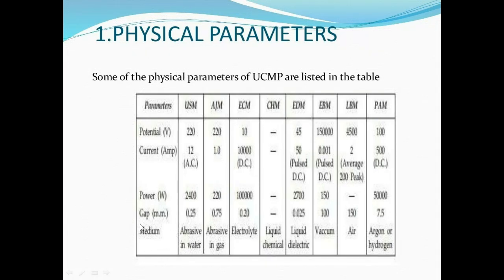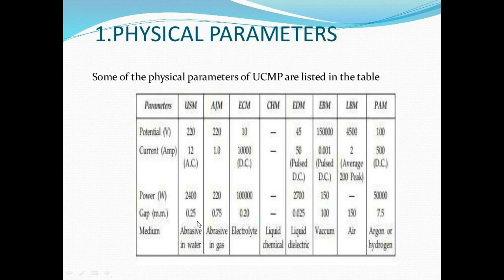For the medium — what type of material is used for removing metal: abrasive in water, abrasive in gas, electrolyte (water plus salt for electrochemical machining), liquid chemicals, liquid dielectric, vacuum, air, argon, or hydrogen. For gap values: ultrasonic machining — 0.25mm; abrasive jet machining — 0.75mm; ECM — 0.20mm; remaining processes — 0.025mm, 100mm, 150mm, and 7.5mm. These gaps must be maintained.